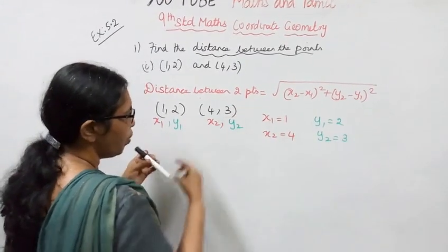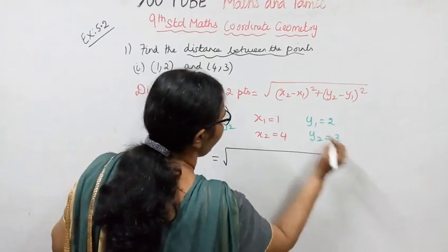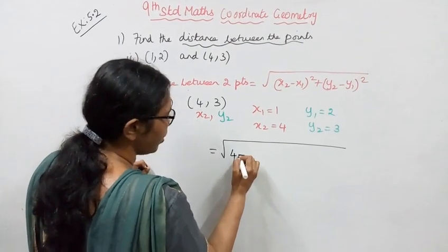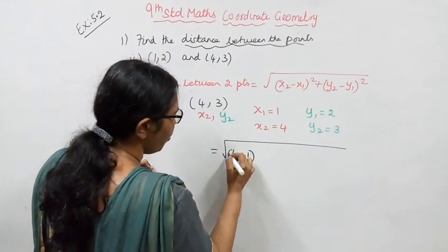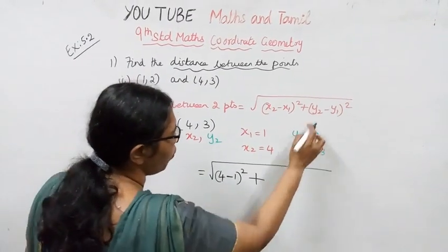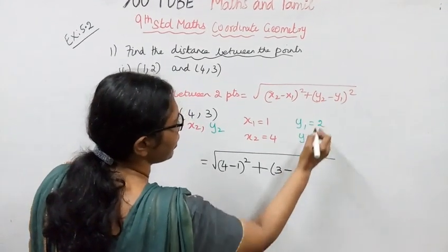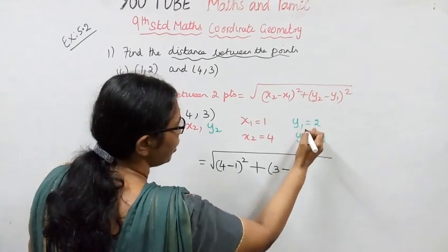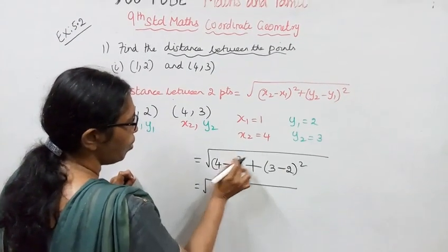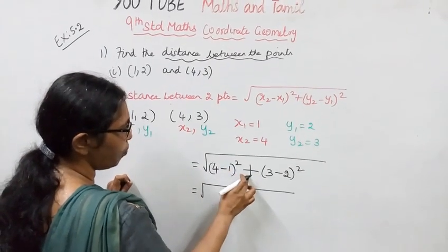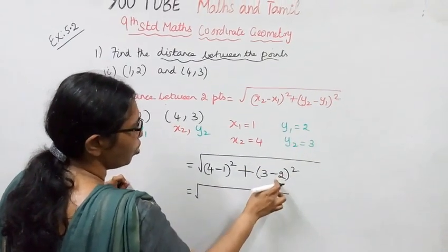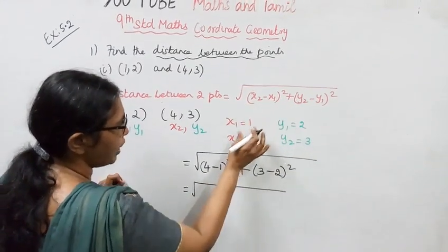Apply the formula: x2, the first element is 4 minus x1 which is 1, the whole square, plus y2 which is 3 minus y1 which is 2, the whole square. The formula looks like square root of (4 minus 1) whole square plus (3 minus 2) whole square.